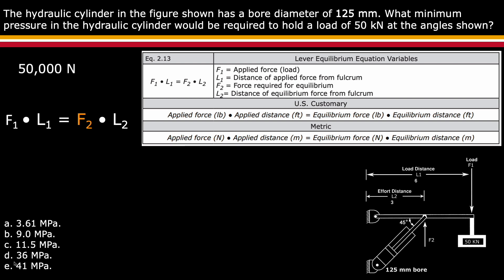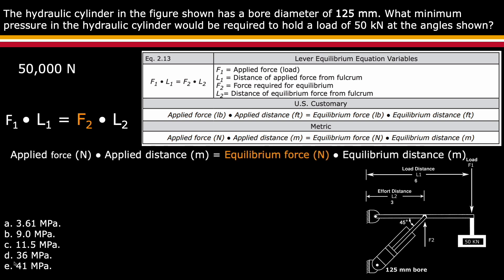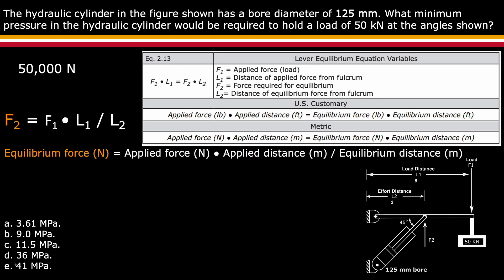F1 times L1 is equal to F2 times L2. Since the units in the question are metric, use the metric equation to calculate. Looking at the question and the graphic and determining that F1, L1, and L2 are provided, solve for F2.